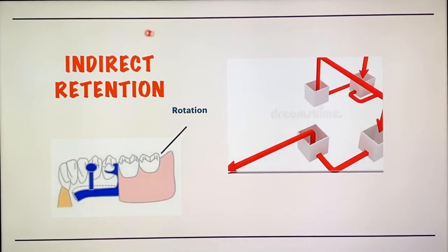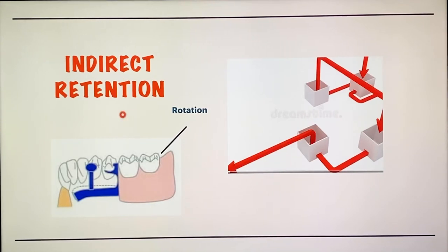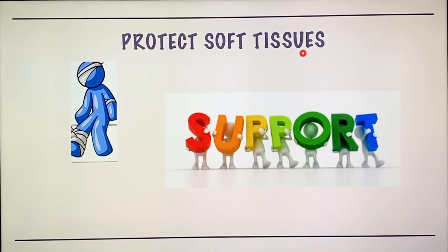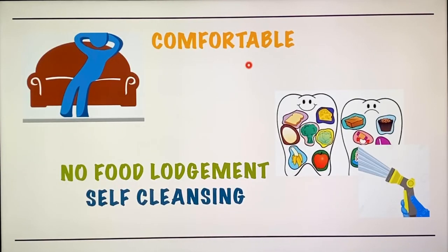Second, it should provide indirect retention. Indirect retention helps to prevent rotatory movement. Our major connector does not replace the indirect retainers, but whenever it is necessary, our major connector must provide indirect retention. It should protect the soft tissues — our assembly should not cause any harm to the tissues, and it should maintain vertical support. It should be comfortable to the patient, because if it is not comfortable, your patient will not wear your assembly. There should not be any food lodgment and it must be self-cleansing.